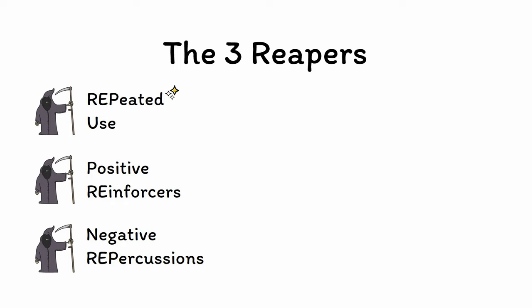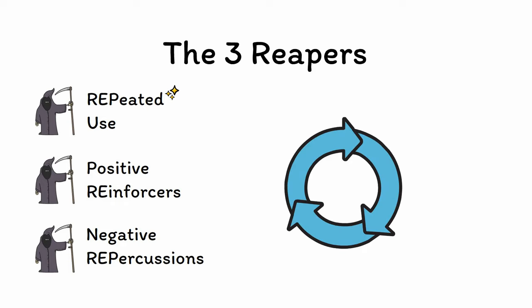The first reaper is repeated use. Addiction naturally involves doing something repeatedly. This can involve use of substances, or it can involve specific items or behaviors, such as gambling at slot machines.